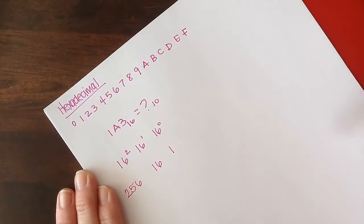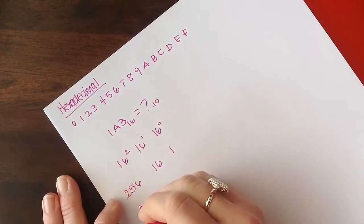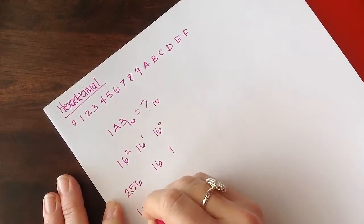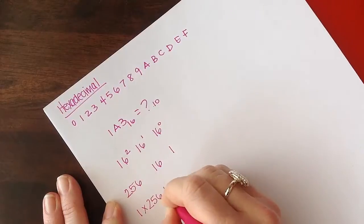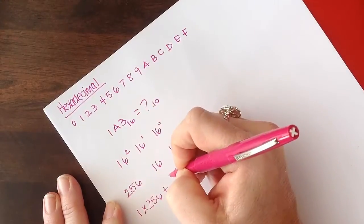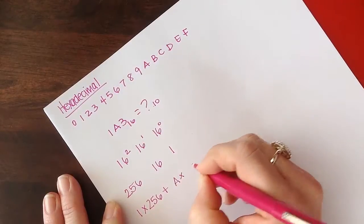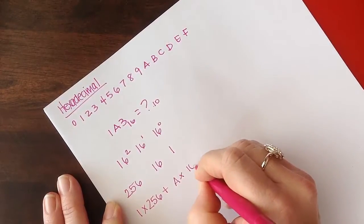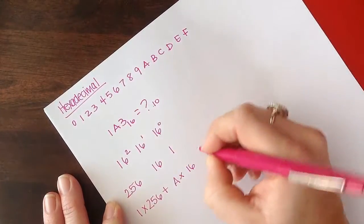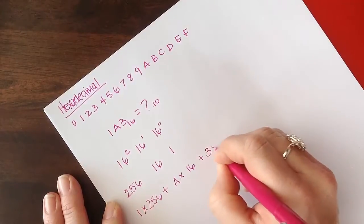So when we want to do 1A3, we do 1 times 256 plus A times 16 plus 3 times 1.